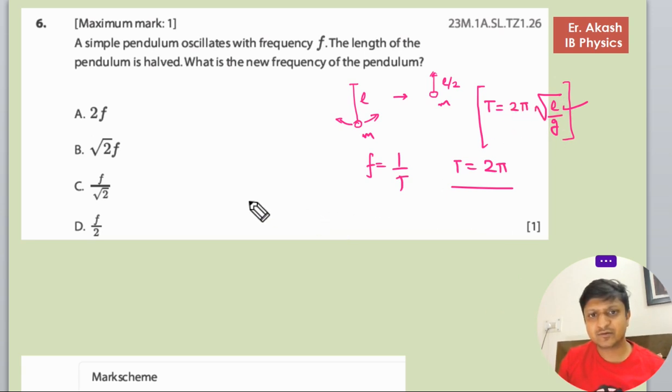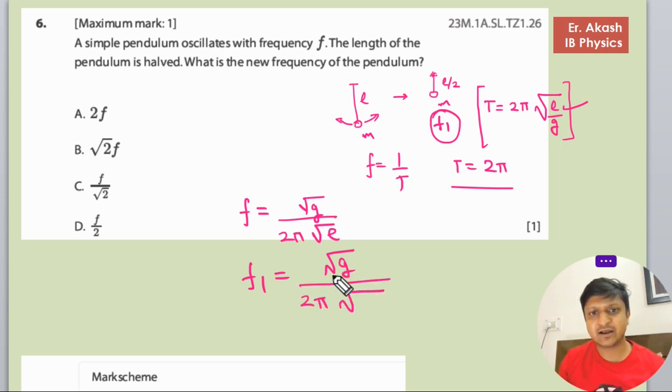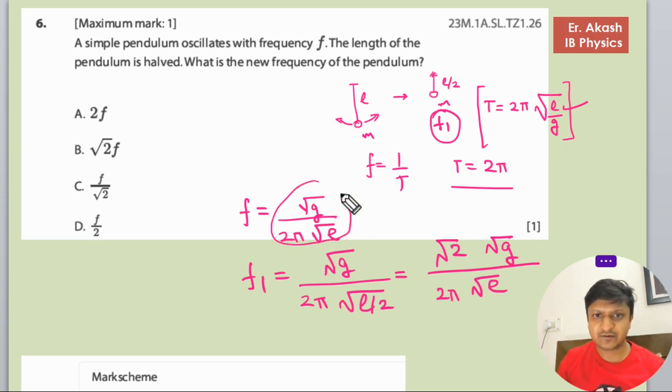And we have to find the value with f, so there is no need to calculate. So this is the value, so f is equals to 1 by T, so this is 1 by 2π root l, and root g will come above and 2π root l. So this figure and these figures are same, so we will write that f₁ is equals to root 2 f.